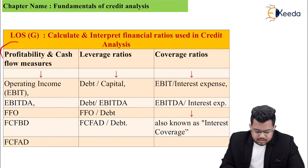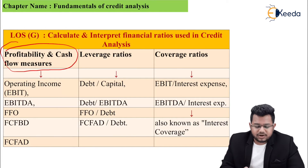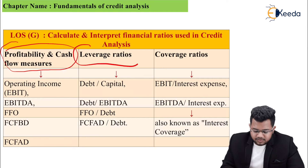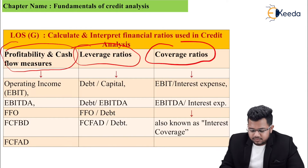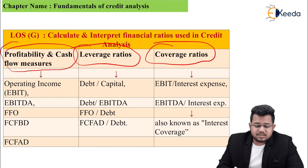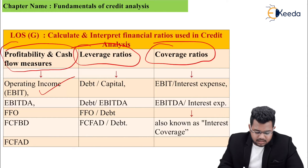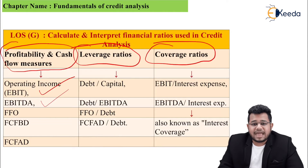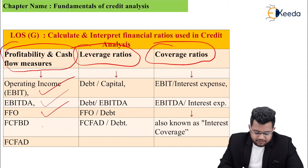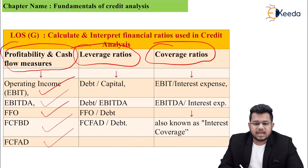The first column is profitability and cash flow measures. These are not ratios but just numbers. The second is leverage ratios and the third is coverage ratios. Profitability and cash flow measures — you need to check if these are good enough. They include: operating income EBIT, EBITDA, FFO funds from operations, FCFBD free cash flow before dividend, and FCFAD free cash flow after dividend. We will study these in detail after the table.